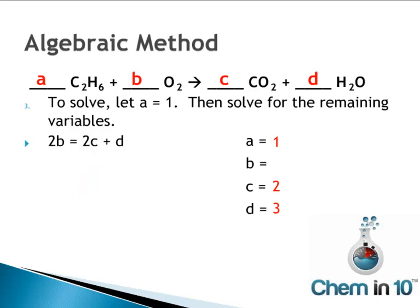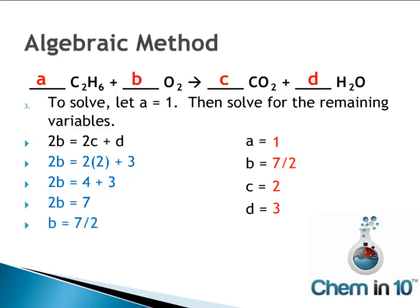Now we're left with 2B equals 2C plus D. Plugging in C equals 2 and D equals 3: 2B equals 2 times 2 plus 3, or 2B equals 4 plus 3, or 2B equals 7. Dividing both sides by 2, B equals 7/2, or 3.5.